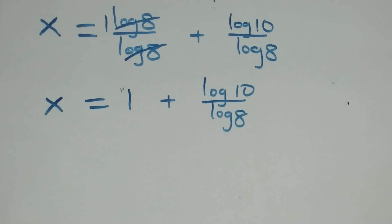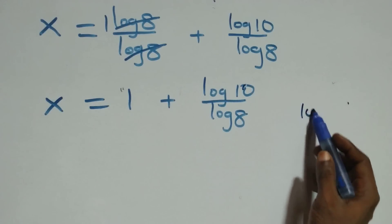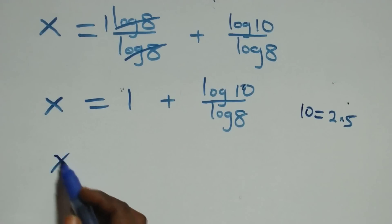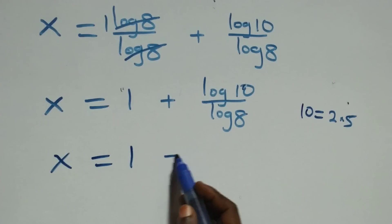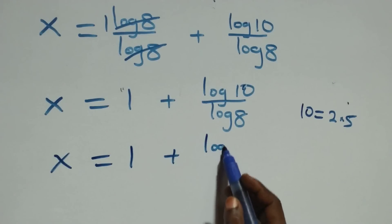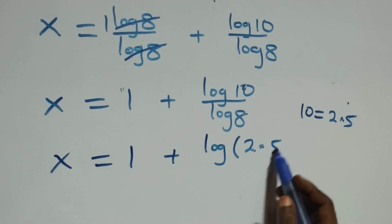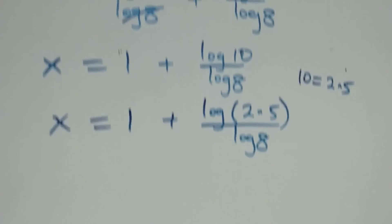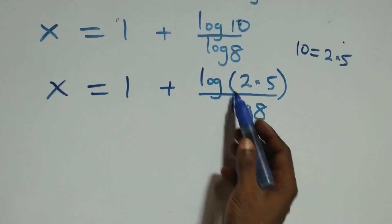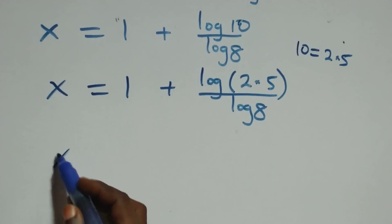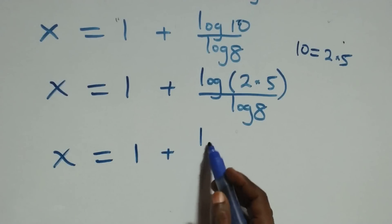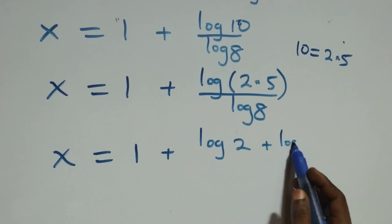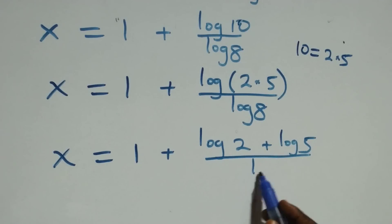Next, we express 10 as 2 times 5, giving x equals 1 plus log(2 × 5) over log 8. Applying the product law again, this becomes x equals 1 plus log 2 plus log 5, all over log 8.